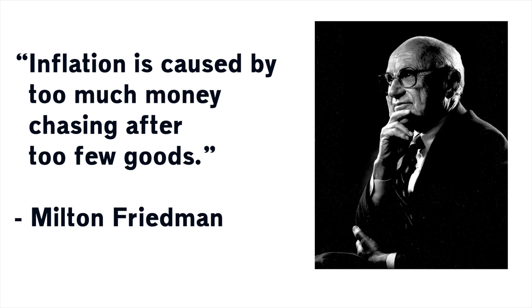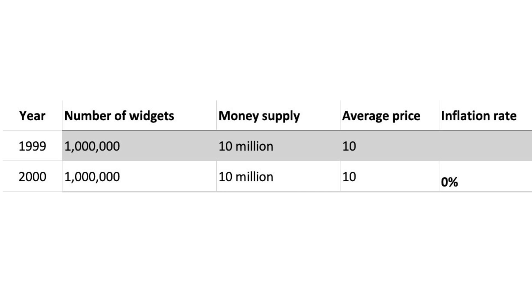So what did he mean by that? Well, if the amount of money in circulation increases faster than the amount of output, then firms will respond by putting up prices. Let us have a look at a few examples. First of all, in 1999, if we have 1 million widgets and a money supply of £10 million, then the average price will be £10 per widget.